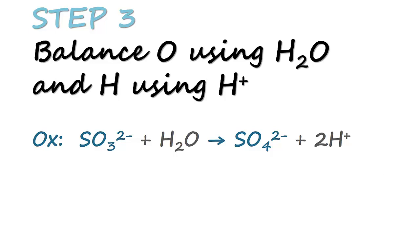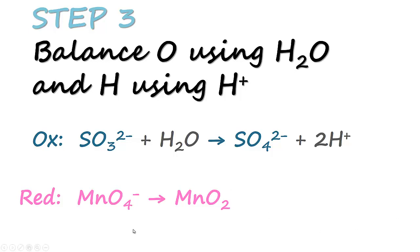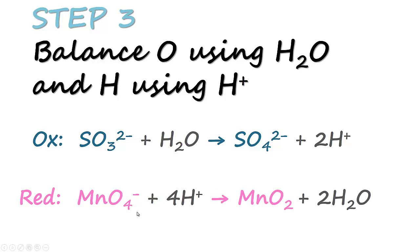For the reduction equation, MnO4⁻ going to MnO2, there are 2 extra oxygen on the left hand side, so we balance by adding 2 water on the right hand side. Now oxygen is balanced — 4 on the left, 4 on the right. But since we added water on the right hand side, we now have 4 extra hydrogen, which we balance by adding 4H+ on the left hand side.